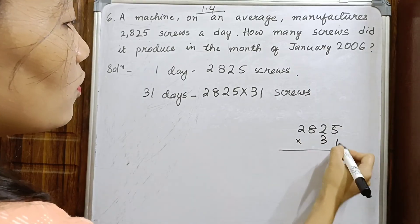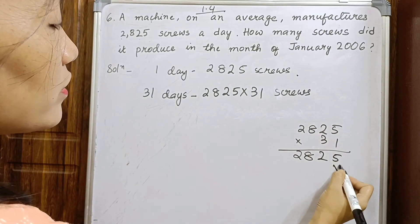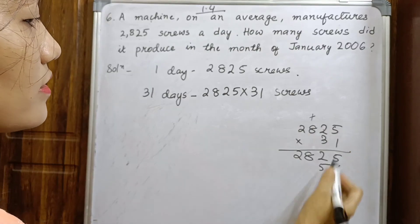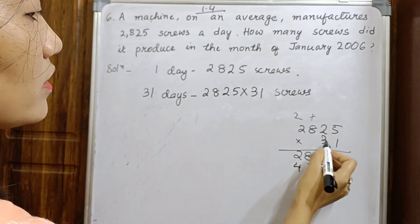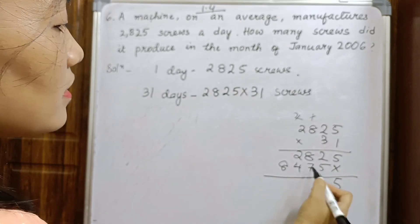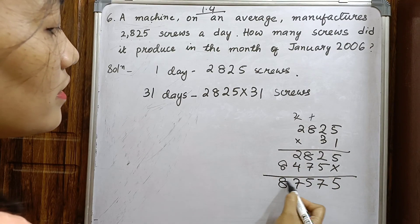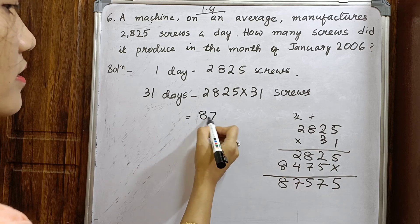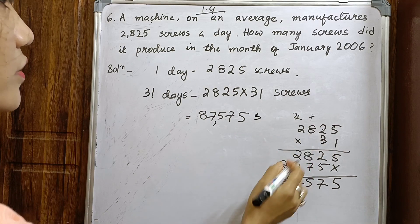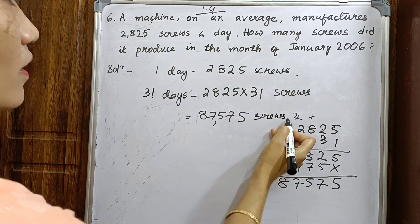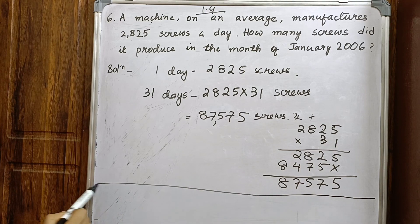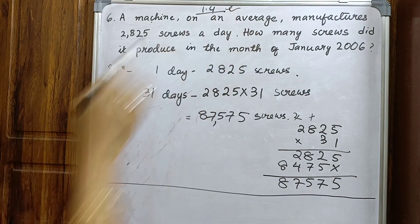Calculating 2825 into 31: multiplying and adding the partial products gives 87,575 screws. So in 31 days the machine produces 87,575 screws. I will solve the other questions from Exercise 1.4 in the next class.